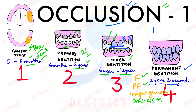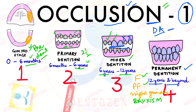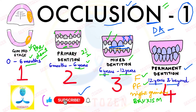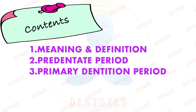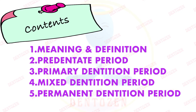The concept of occlusion varies according to different specialties of dentistry, but here we are going to discuss occlusion in the context of dental anatomy for BDS first year. This topic is divided into two parts. Today in part one, we will discuss the meaning and definition of occlusion, then occlusion in the pre-dentate, primary, mixed, and permanent dentition periods, how occlusion in one period affects the next, and the clinical implications of each period.